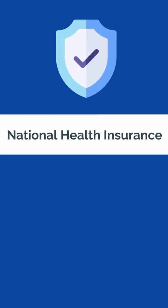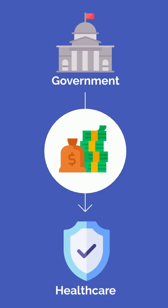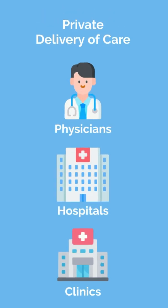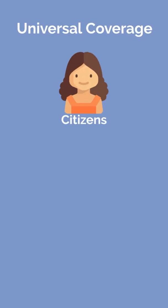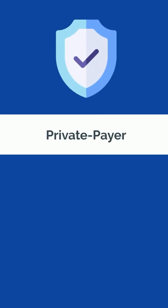In the national health insurance model, found in Canada, the government also funds healthcare; however, there is private delivery of care. The physicians, hospitals, and clinics are all part of the private sector and have greater freedom to practice without government input. In both systems, there is universal coverage, meaning every citizen is financially backed by an insurer with little out-of-pocket cost for healthcare.